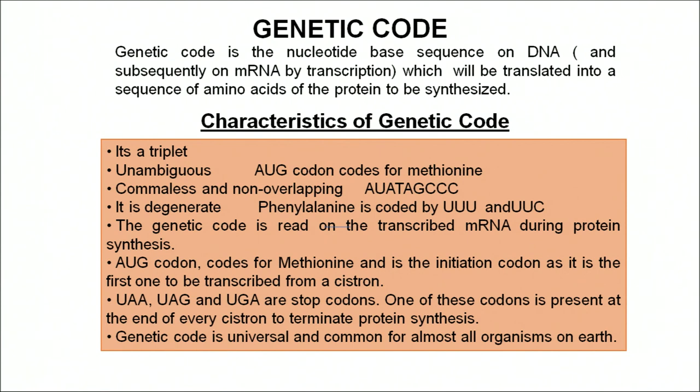Before moving ahead, we must know what a genetic code is. Genetic code is the nucleotide base sequence on DNA which will be translated into the sequence of amino acids of the protein to be synthesized. The genetic code is a triplet — three nitrogenous bases such as adenine, guanine, cytosine. We have a total of four nitrogenous bases, and the DNA can be transcribed into messenger RNA using the rule of complementarity.